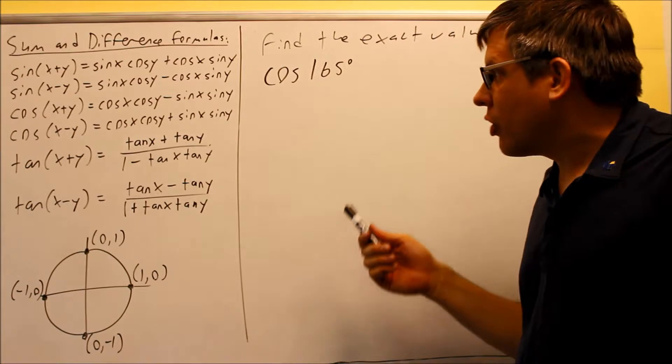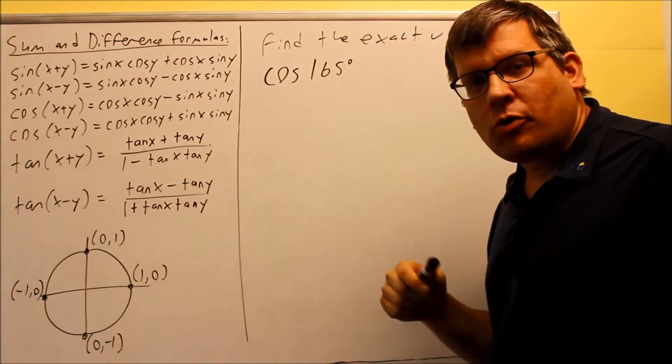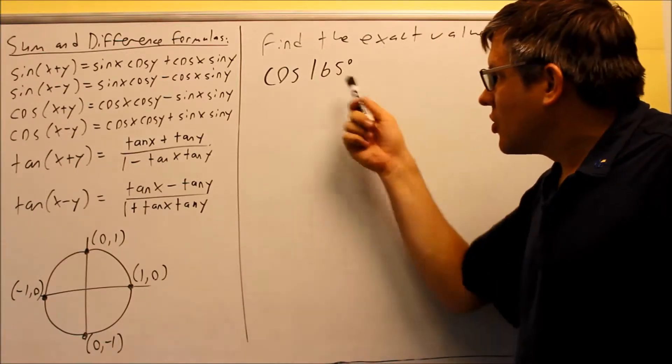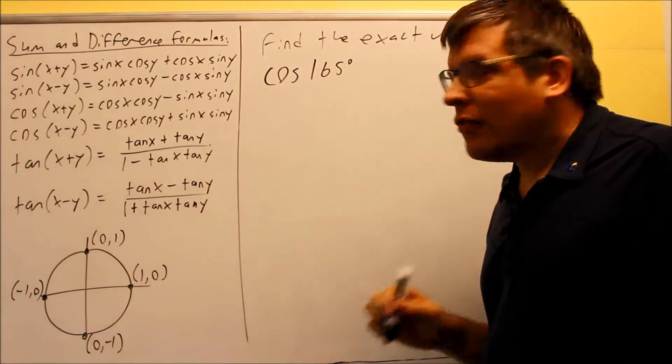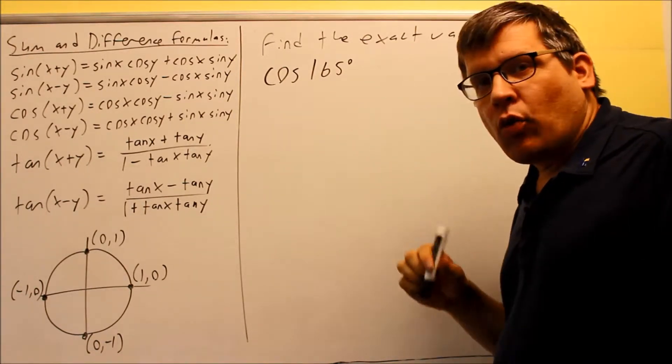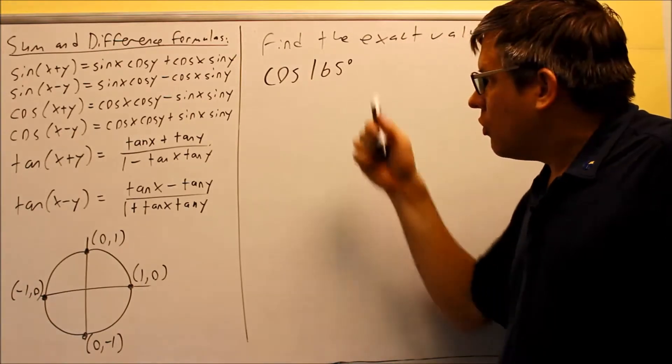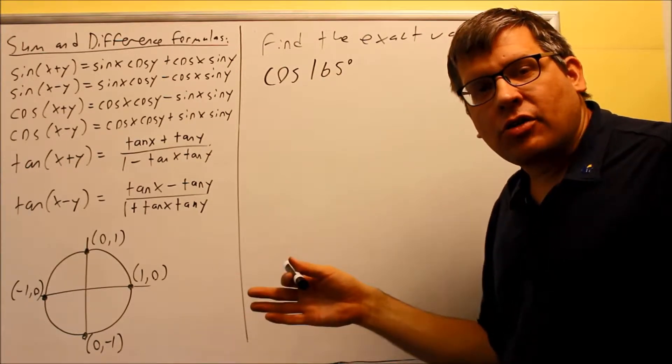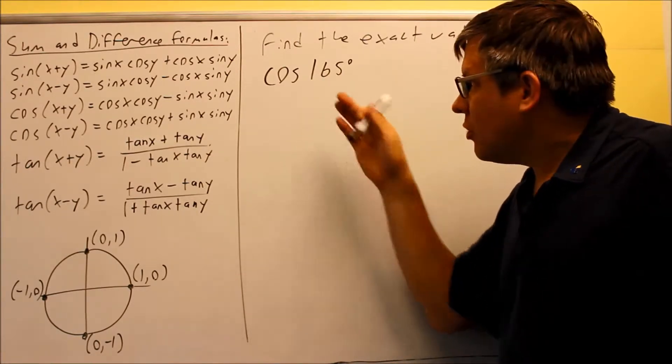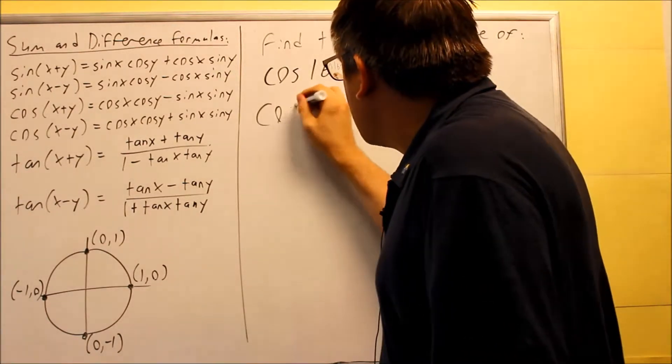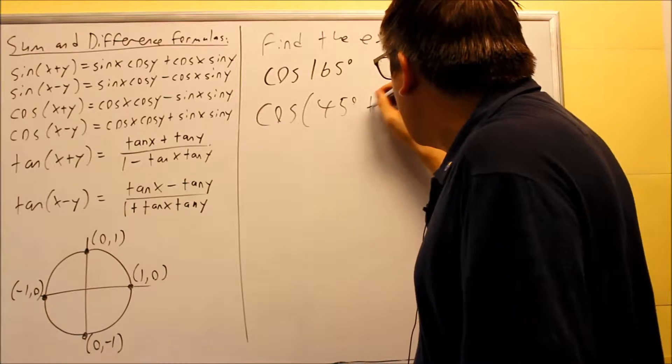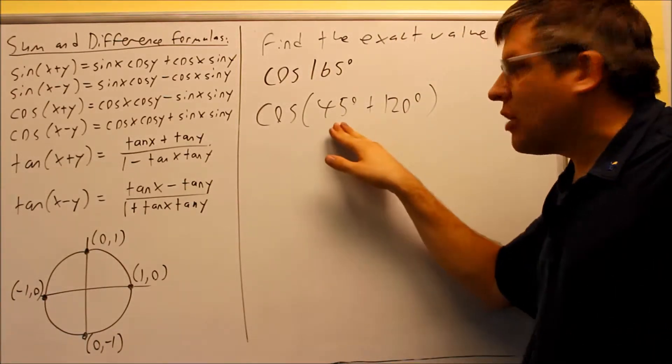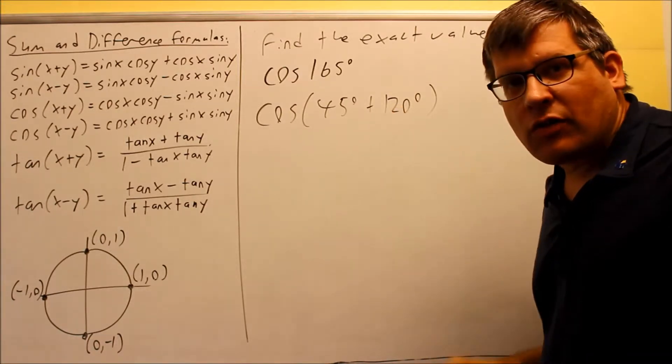So in this case, what we're going to do is start with one value from our table, and then the remaining value is one that we're going to have to use a reference angle in order to get the exact value. There's different ways that you could write 165. You could do 30 and 135 or 45 and 120, many different combinations. You just want to pick one where you have one angle on your table and the other one is going to be one where you can work with a reference angle. The one that I'm going to use specifically here is 45 plus 120.